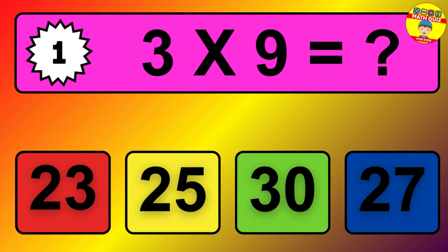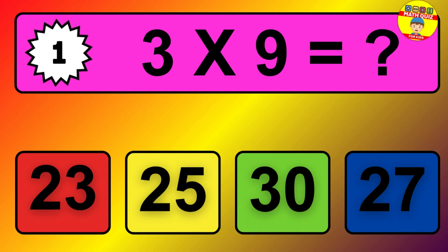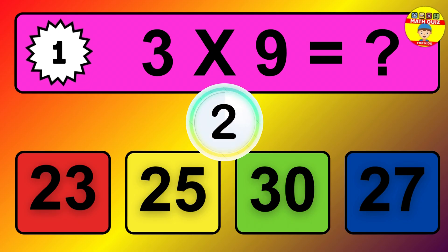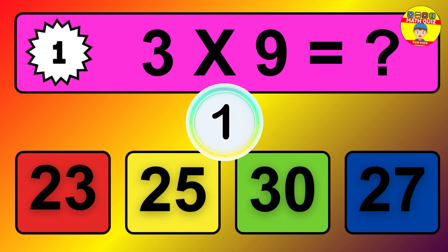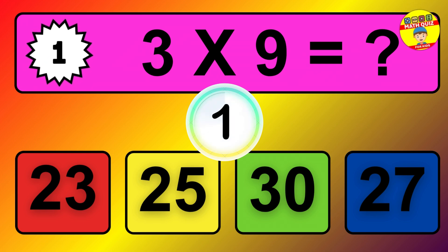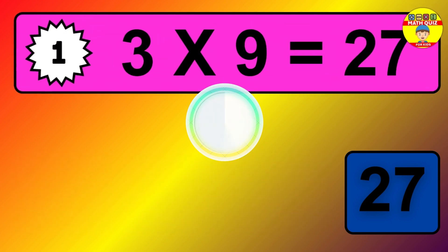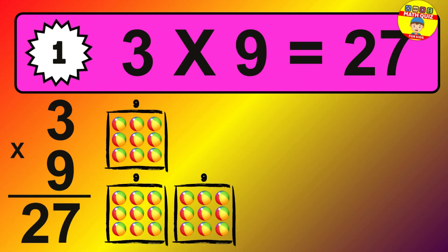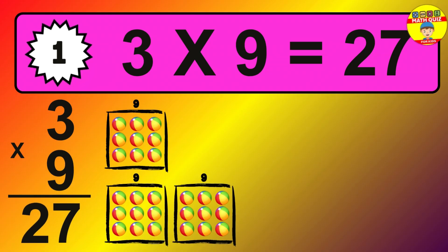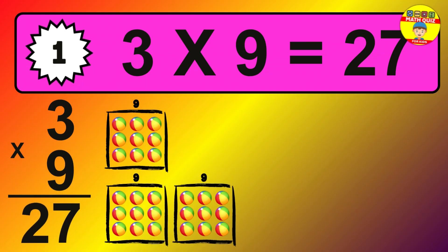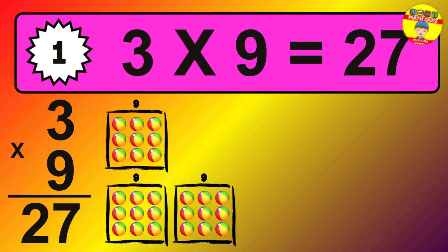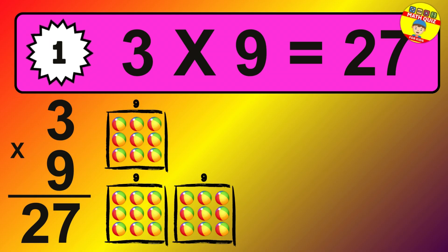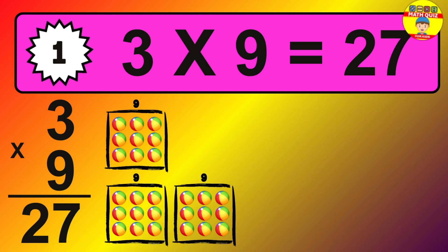Question 1. 3 times 9 equals what? The answer is 3 times 9 is 27. To calculate, we have 3 groups with 9 balls each one. So, how many balls do we have? 27 balls.